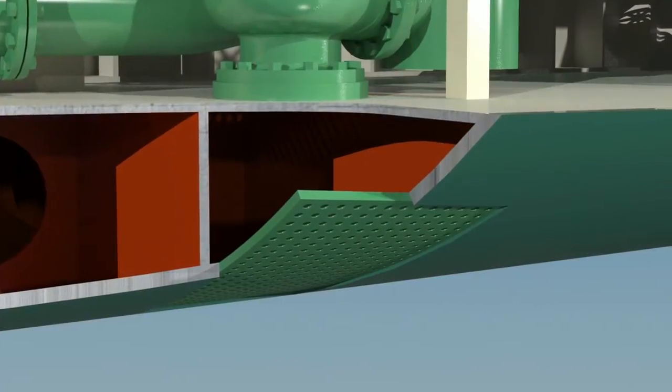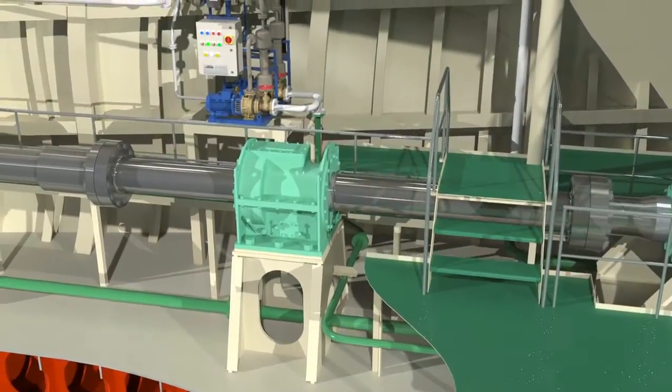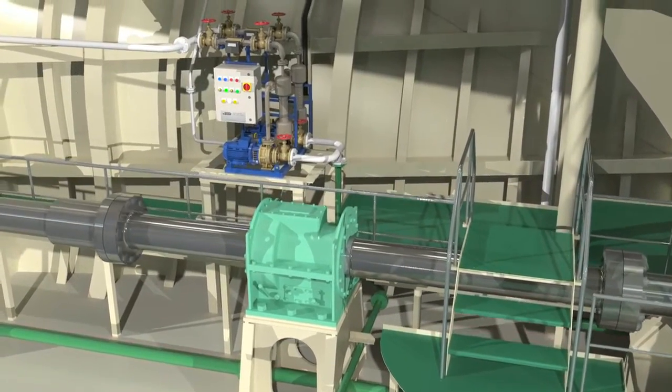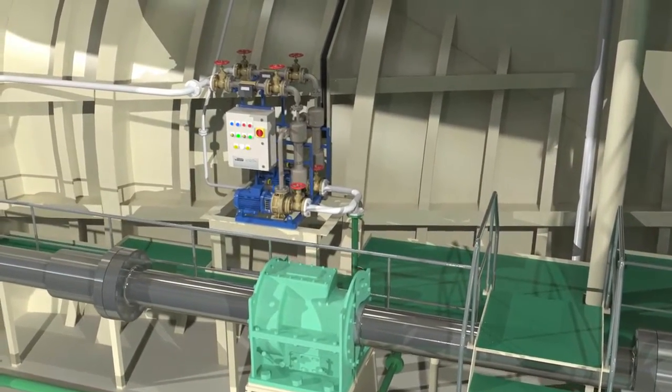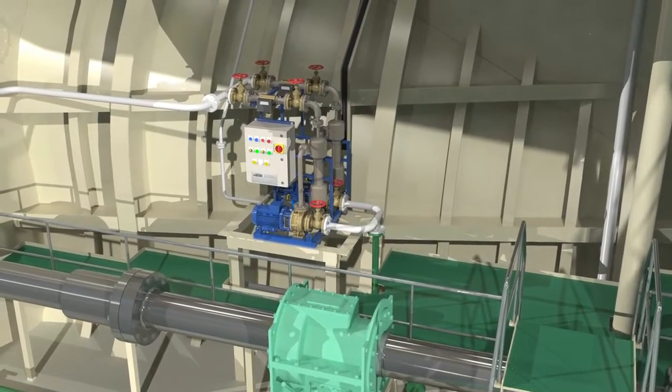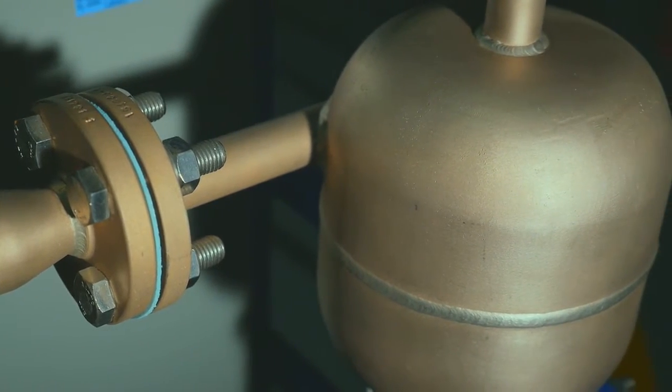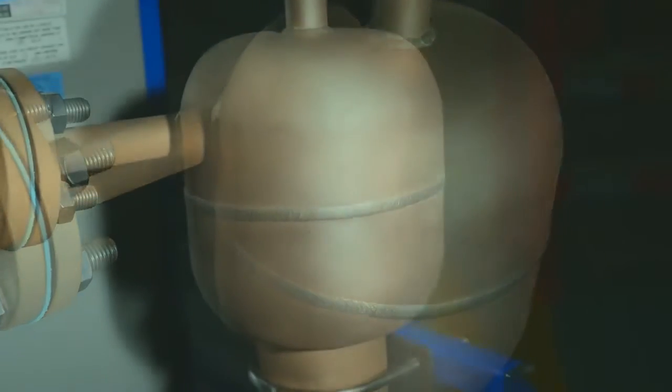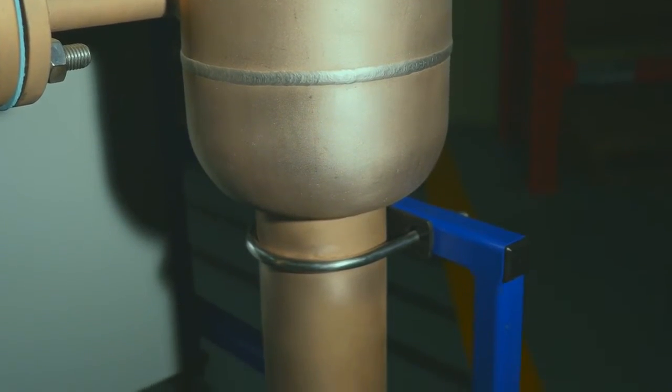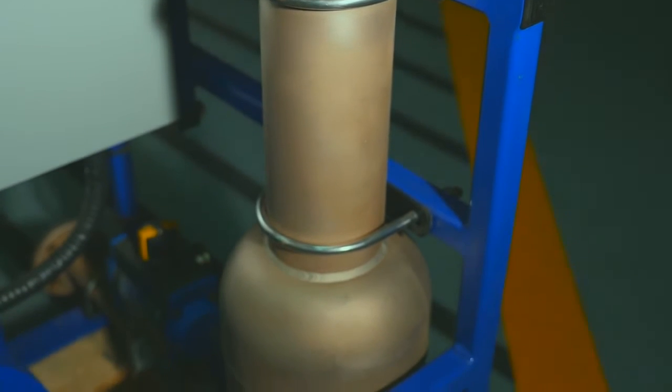Seawater enters the vessel through the sea chest where an element of crude filtration takes place. The water then flows to the suction side of the pump built into the Thordon water quality package. Water enters the separation bowl tangentially and the spinning water throws dirt particles to the outside where they fall down the column to the collection bowl in the base.